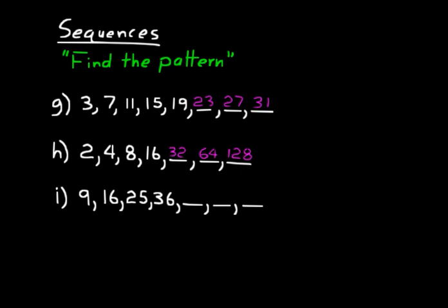For practice problem I, find the next three numbers in that sequence. Each number is a squared term: 3 squared is 9, 4 squared is 16, 5 squared is 25, 6 squared is 36. So 7 squared is 49, 8 squared is 64, and 9 squared is 81 — those are the next three numbers in that sequence.